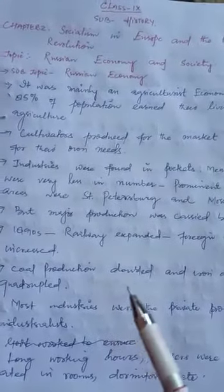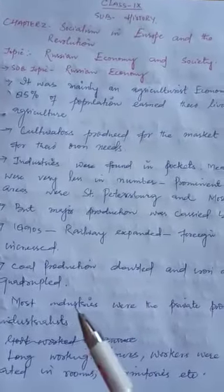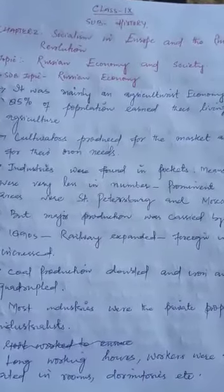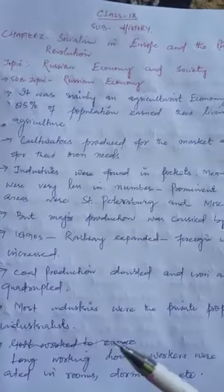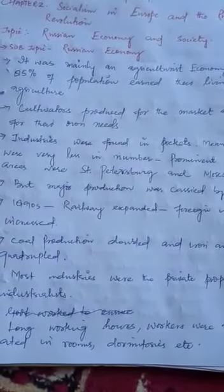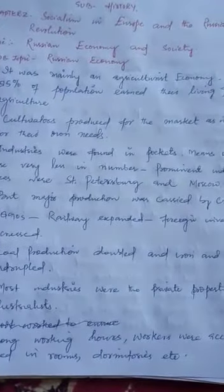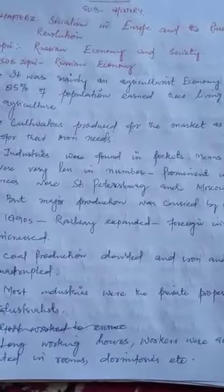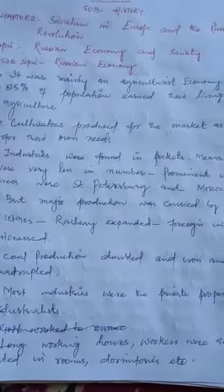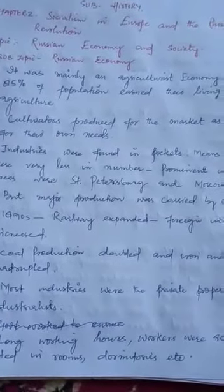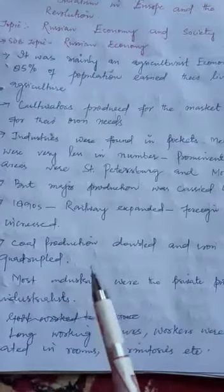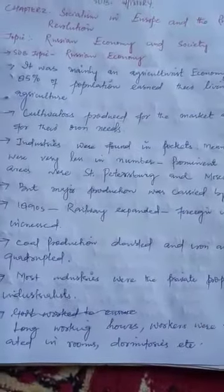Most industries were privately owned — there was no nationalization. The private owners focused on profit maximization. They did not care for the welfare of the workers or the people. Their main goal was to generate more and more profit.